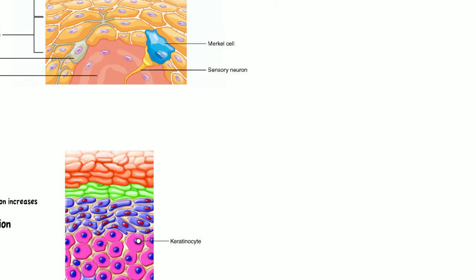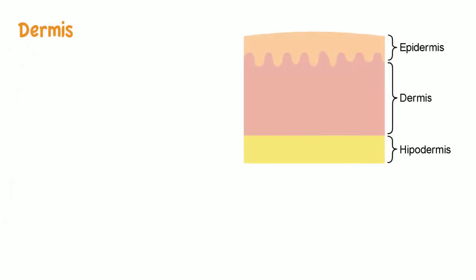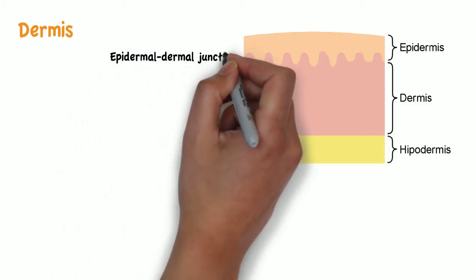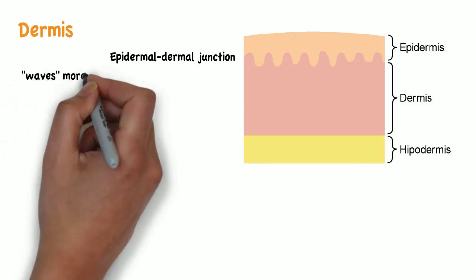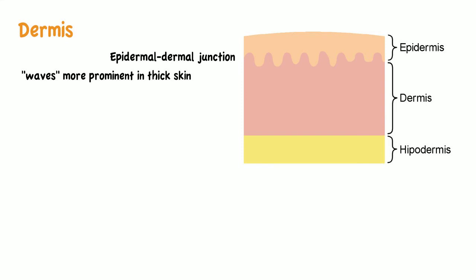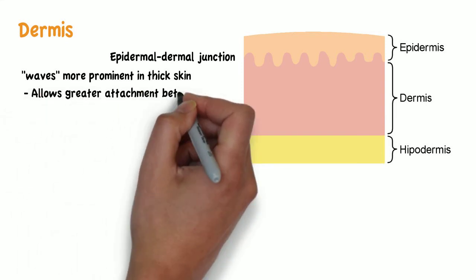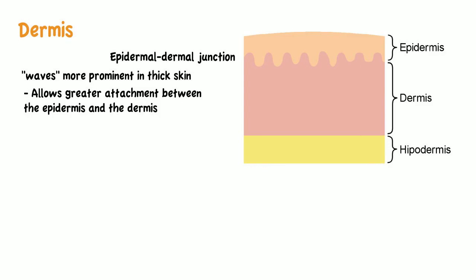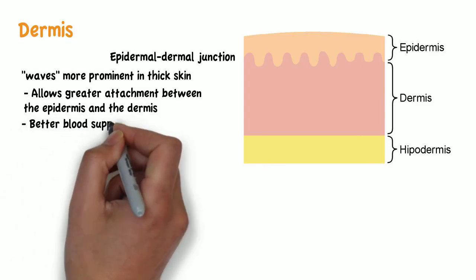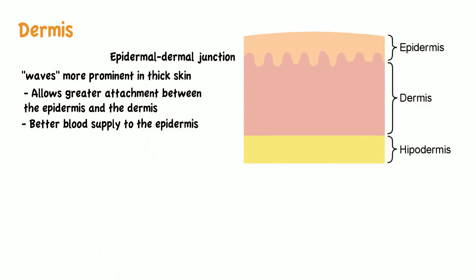Moving on to the dermis — where the dermis starts and the epidermis ends, we have the epidermal-dermal junction. This has a wave-like appearance, and these waves are more prominent in thick skin. This is to allow greater attachment between the epidermis and the dermis so the layers won't detach, and to allow a better blood supply to the epidermis. Remember that there are no blood vessels in the epidermis, so blood must travel from the dermis.